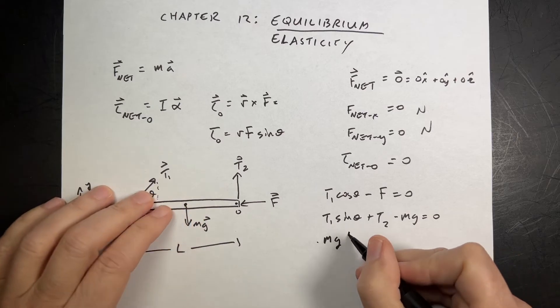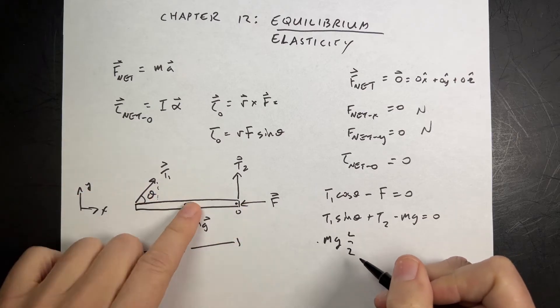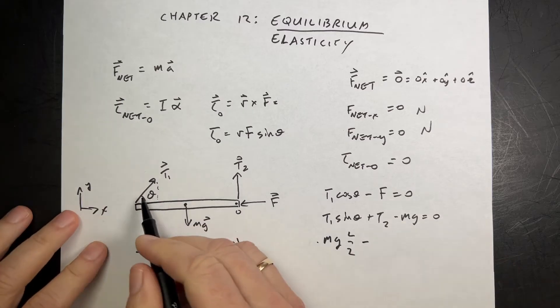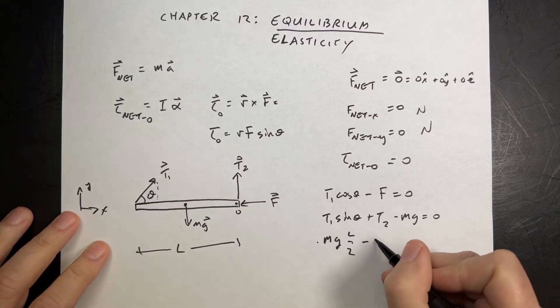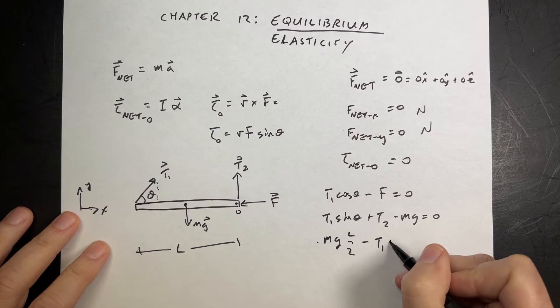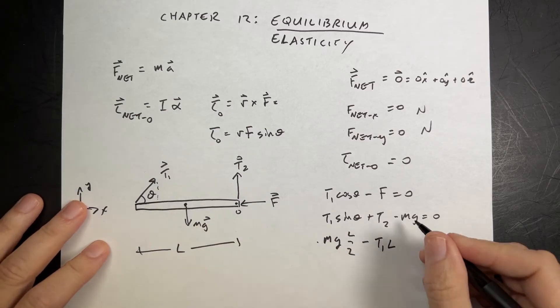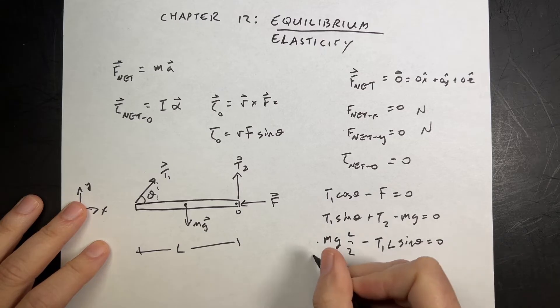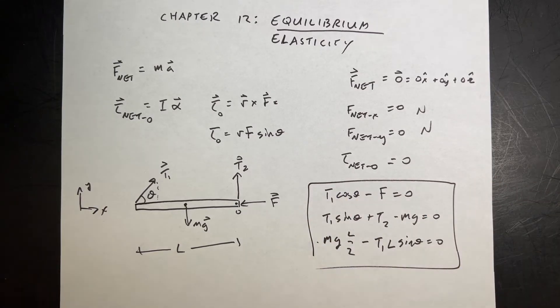times the angle between those, which is 90 degrees, sine of 90 is 1. And then, this would have a negative torque. It would be negative T1 times L times the angle between them, which is sine of theta. And so, then you could take these three equations and solve them for whatever you need to know, probably f or something like that. Okay.